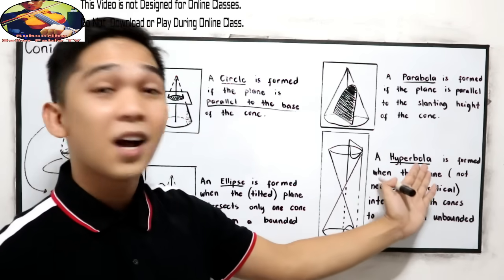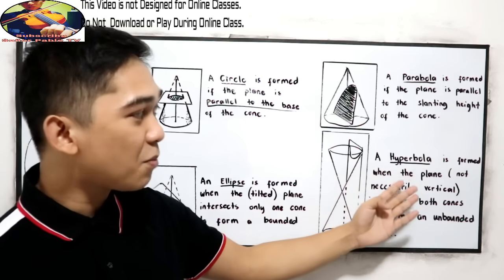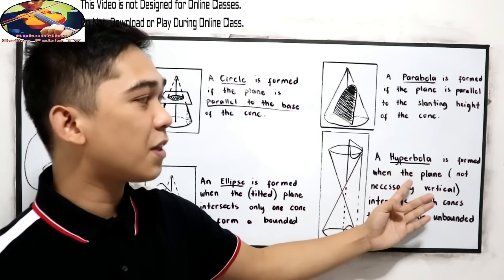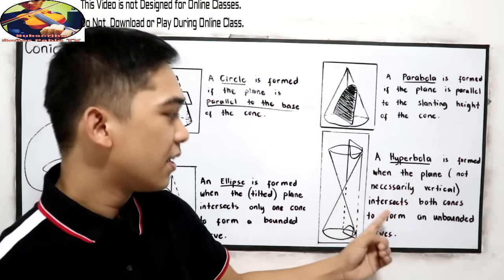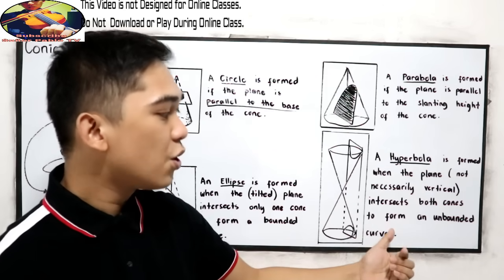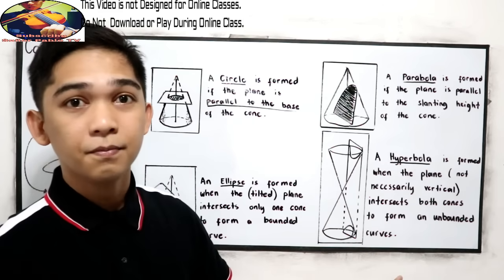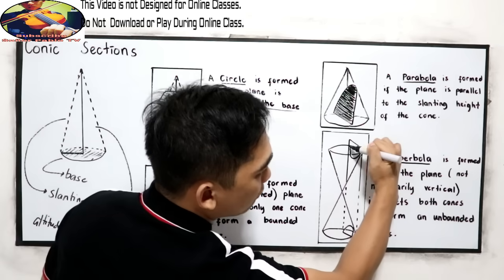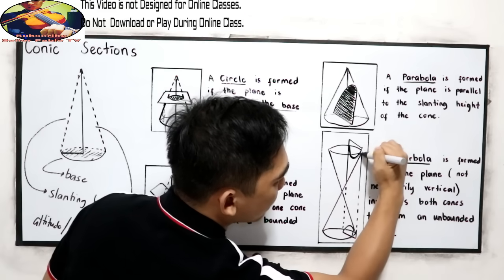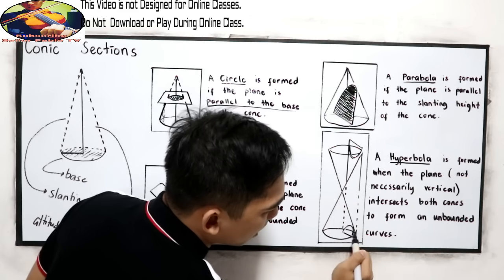A hyperbola is formed when the plane, not necessarily vertical, intersects both cones to form an unbounded curve. So, you notice, in this illustration, you will form a hyperbola here. Actually, it's just like a parabola.